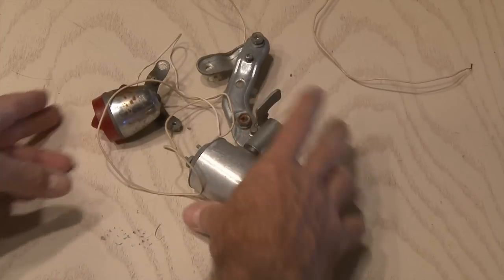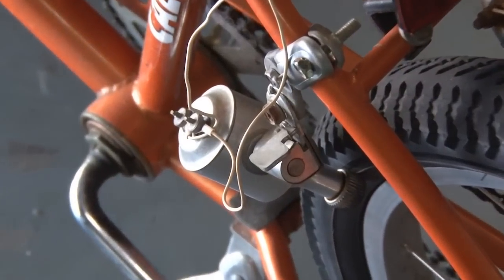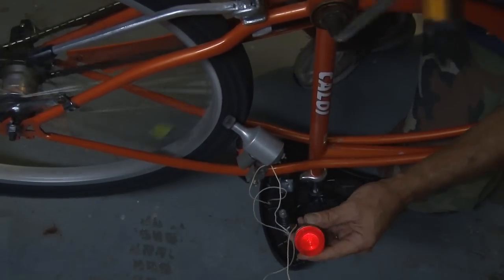This project started at a garage sale where I picked up this old bicycle light generator. This thing cost me $3. This is the kind that attaches to the bike and the little wheel rubs up against the tire, and as it turns it generates power.